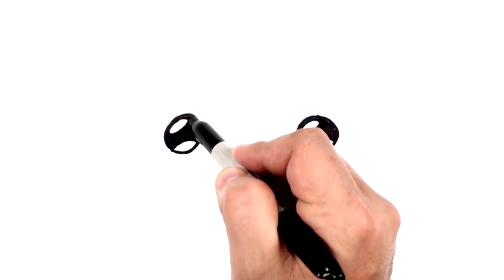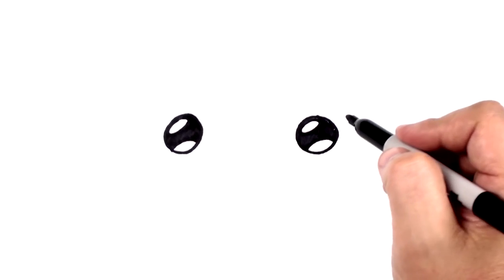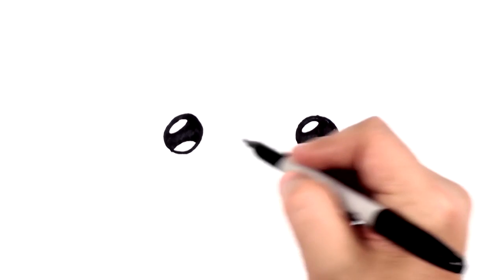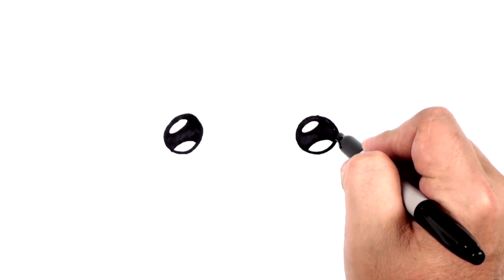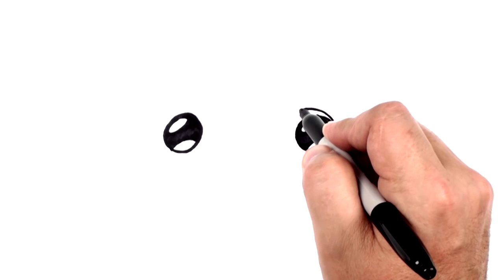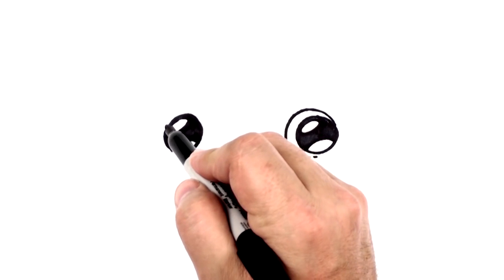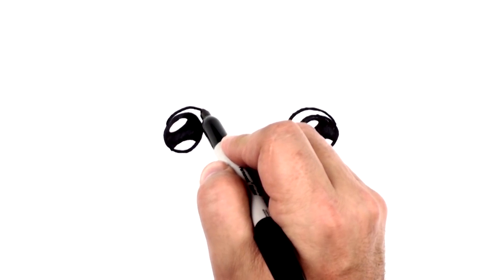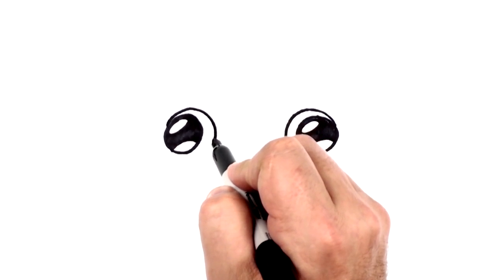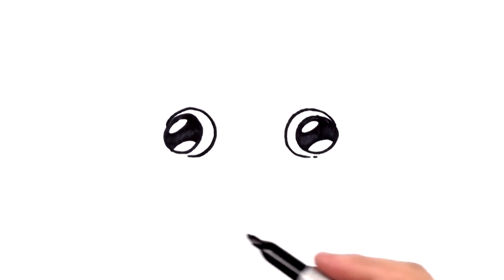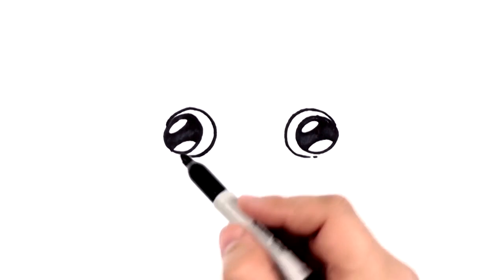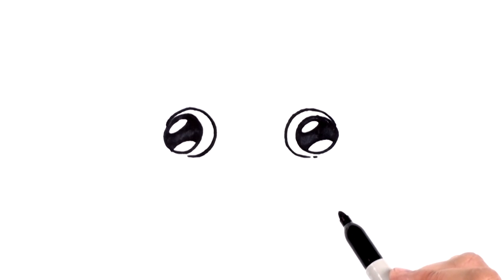All right, now this dog is going to have its eyes sort of looking out to the side. So we're going to come here and draw a curve like that. And this side, we're going to do sort of the mirror image, which is going to make his eyes kind of not cross-eyed, but I don't know if you call that wall-eyed. They're kind of looking out to each side.